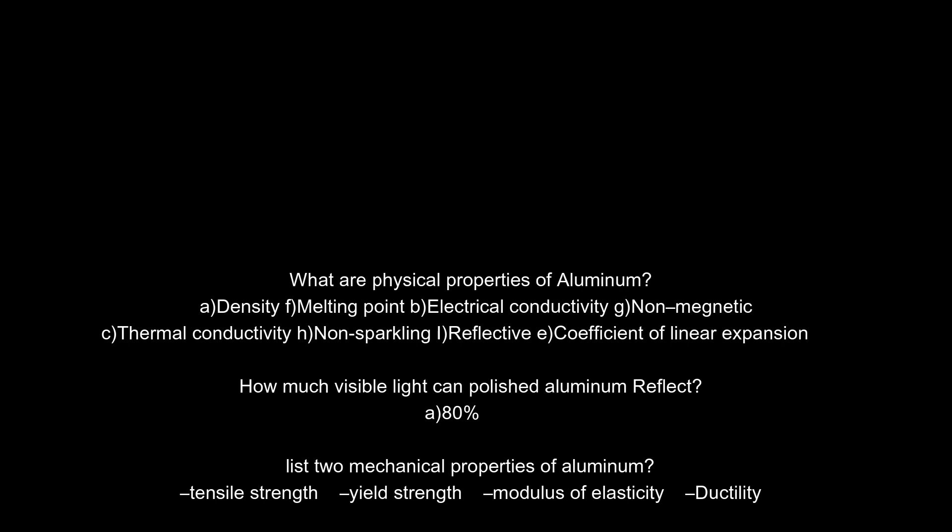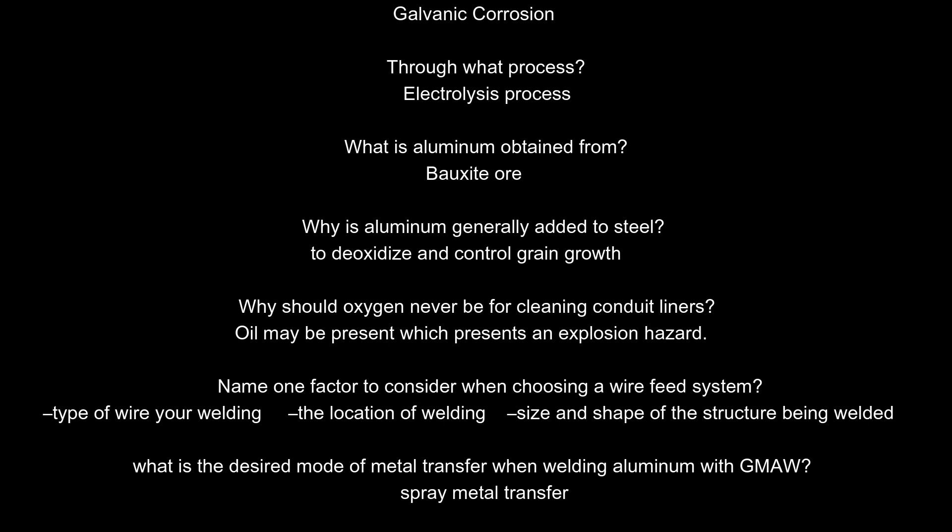Why is aluminum well suited for cryogenic applications? Aluminum strength increases at sub-zero temperatures. How do you offset the distortion that can occur when welding aluminum? Use more tacks. What must be removed before any welding can occur on aluminum? The oxide layer. Aluminum is corrosion-resistant, but galvanic corrosion can take place through the electrolysis process. What is aluminum obtained from? Bauxite ore.